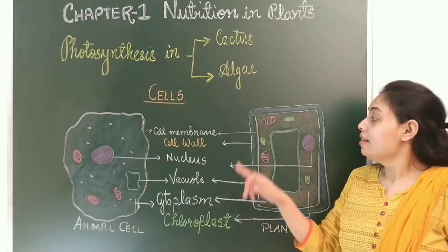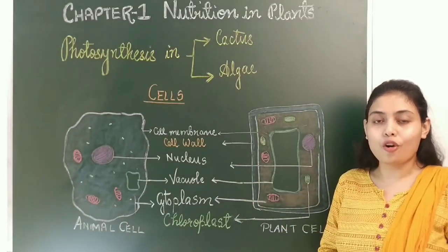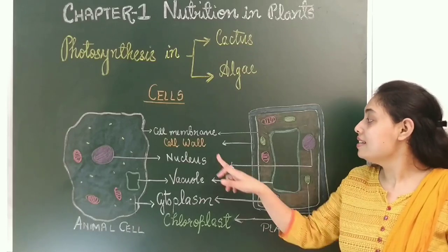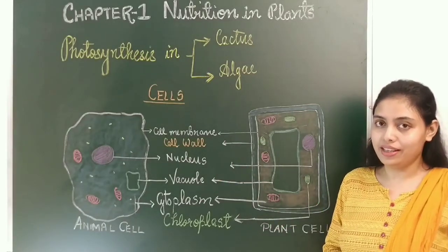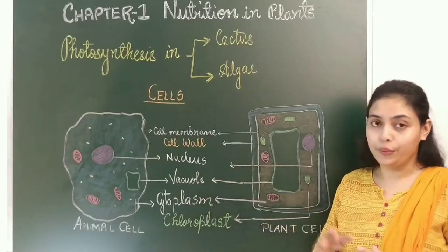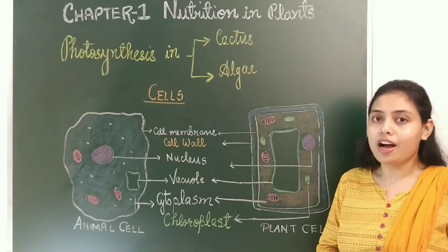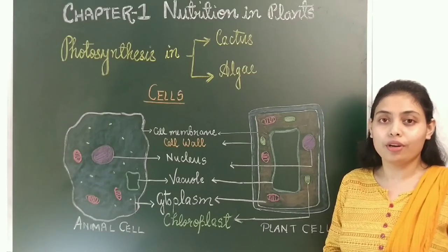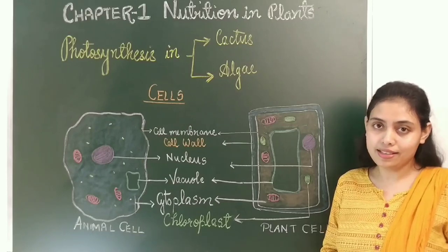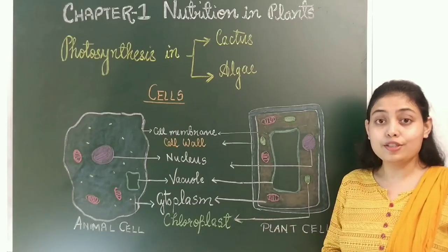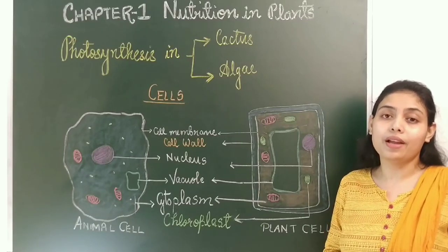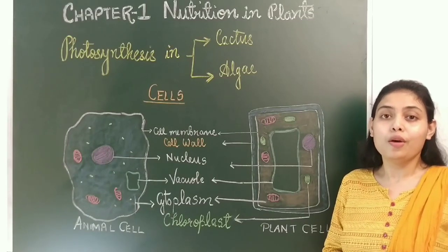Plant cell: The outer covering of a cell is called cell membrane. Plant cells have an extra covering for extra protection called the cell wall. A plant cell also has a nucleus, which acts like the brain of the cell. Plant cells have a large vacuole compared to animal cells, where it stores its waste product. The fluid of the cell is called cytoplasm. Chloroplast is unique to plant cells — animal cells don't have chloroplast. The chloroplast is present in plant cells and contains chlorophyll which helps in photosynthesis.